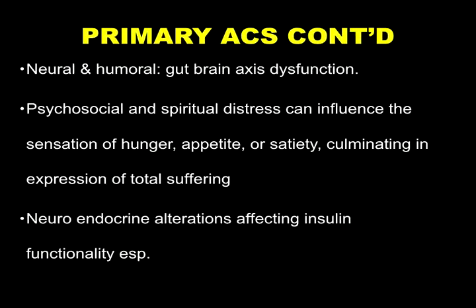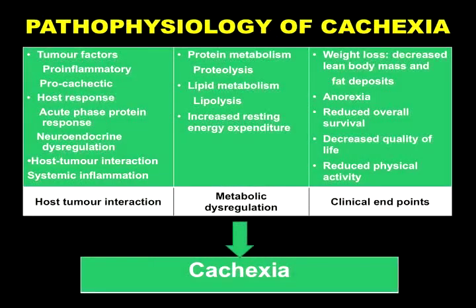We can look at the pathophysiology in two main units: the host-tumor interaction — mainly these tumors which are causing the cachexia — and the metabolic dysregulation happening in these patients. The metabolic dysregulation is characterized by protein metabolism, mainly proteolysis, then lipid metabolism, mainly lipolysis, and eventually an increased resting energy expenditure as a result of the cytokines initiating these processes.